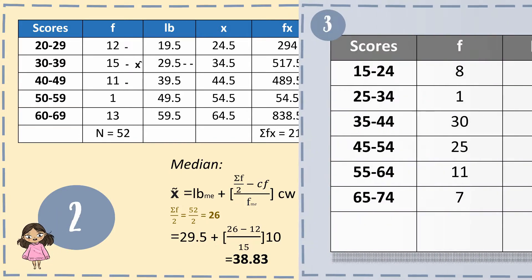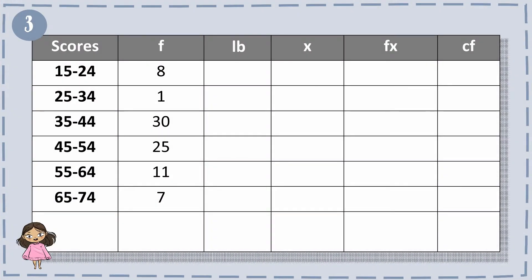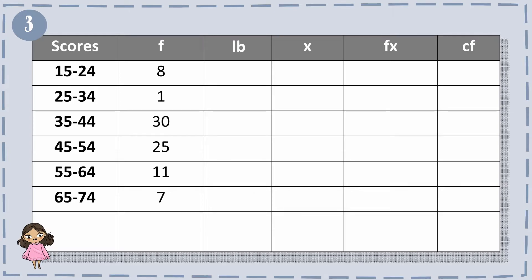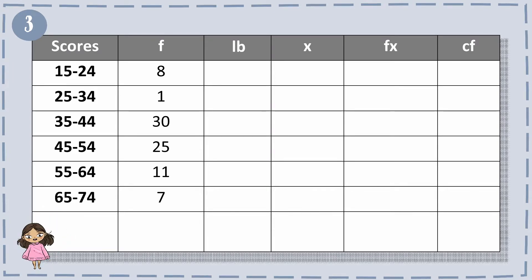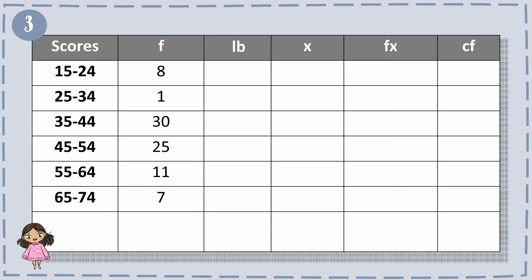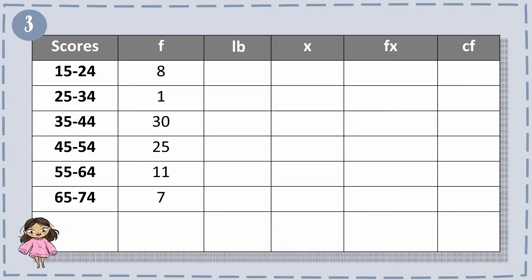For example number 3, we have the scores of 15 to 24, 25 to 34, 35 to 44, 45 to 54, 55 to 64, and 65 to 74, with the frequencies of 8, 1, 30, 35, 11, and 7, in a total of 82.